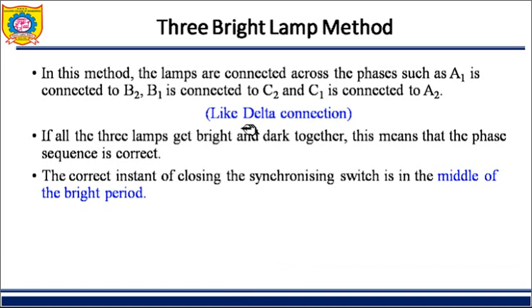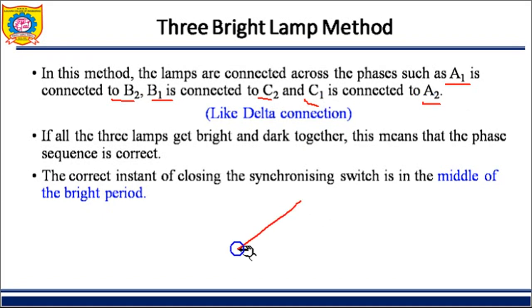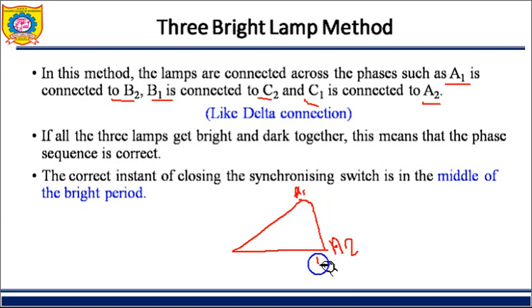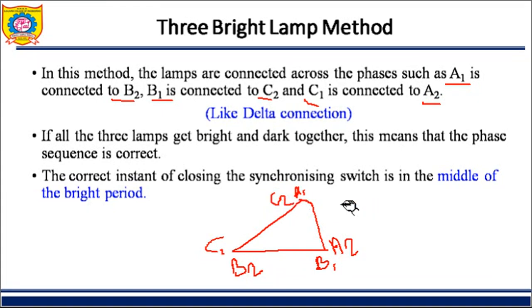Now we are going to form a delta-like structure. Point A1 is connected to B2, point B1 is connected to C2, and point C1 is connected to A2 — forming a delta structure. So this is A1, A2, B1, B2, C1, connected to C2. We are following a delta connection arrangement.